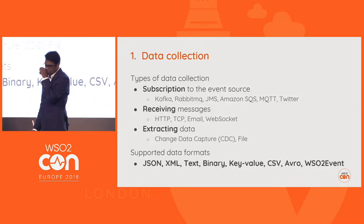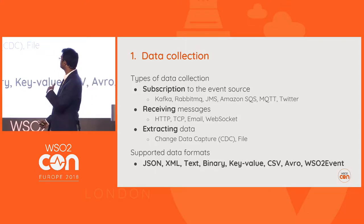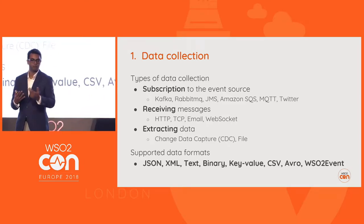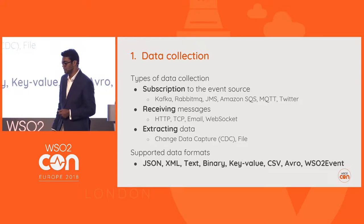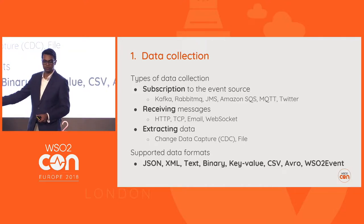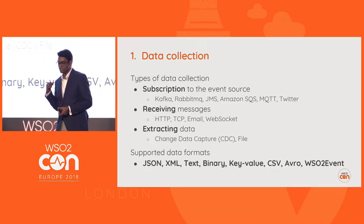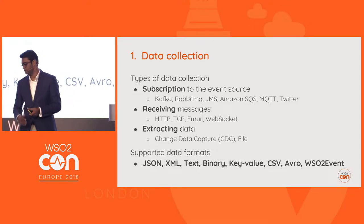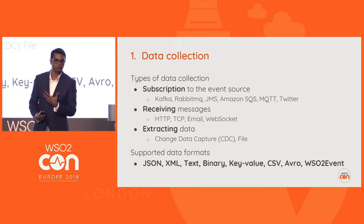For data collection, you can collect data in three forms. First, you can subscribe to a stream like Kafka, JMS, or RabbitMQ. Second, you can be passive and receive messages from others — HTTP, TCP, or email. Third, you can extract information from sources via change data capture, crawling a database, or reading from a file. Data can come in formats like JSON, XML, text, binary, key-value pairs, CSV, Avro, or WSO2's own format.